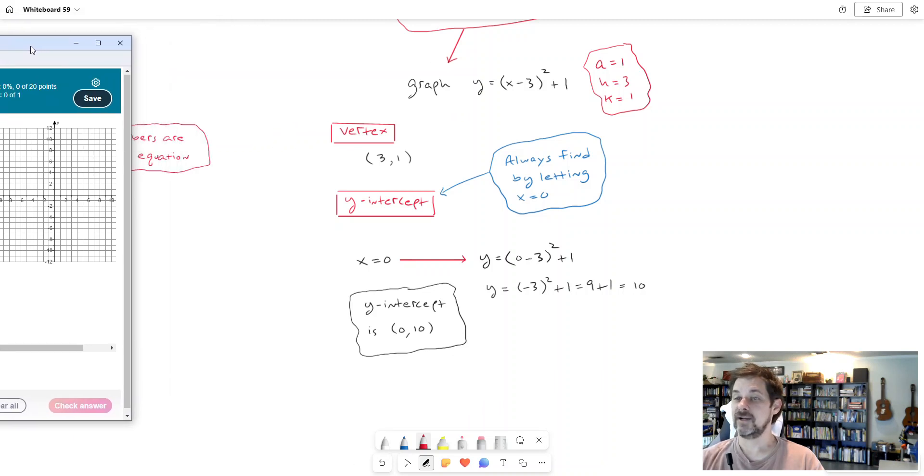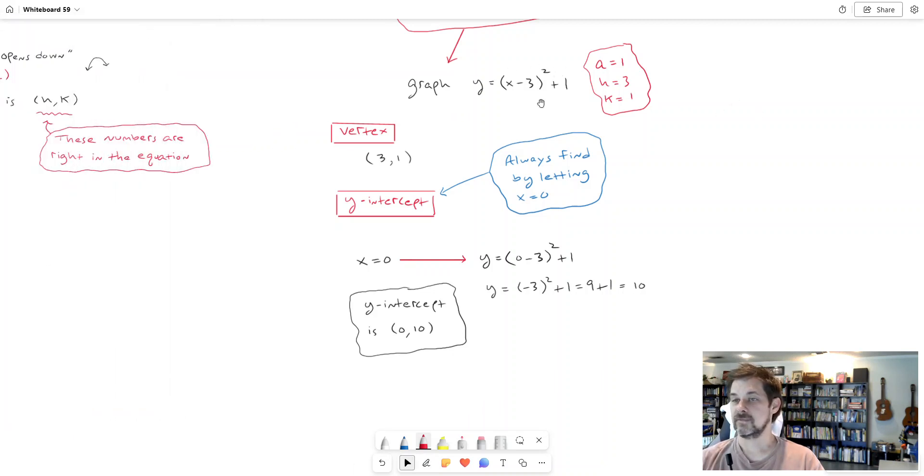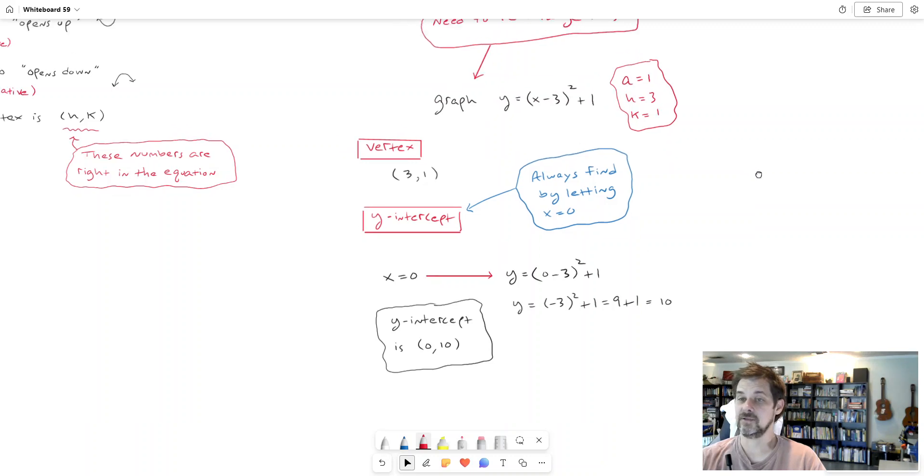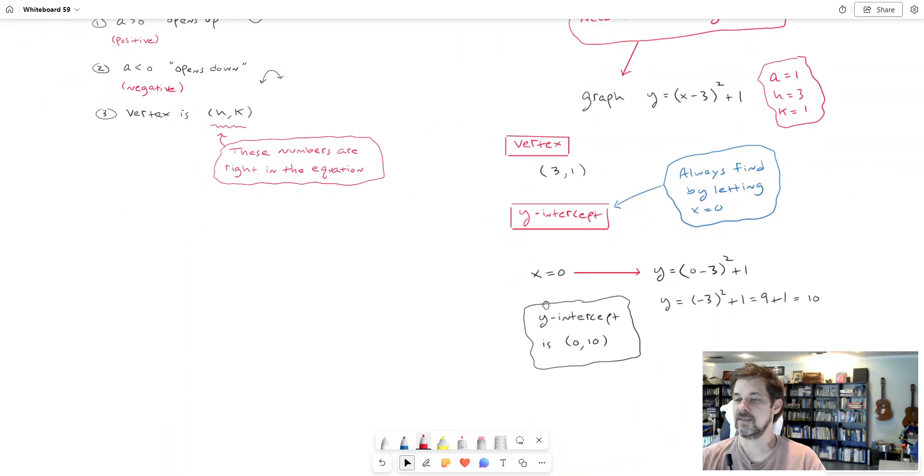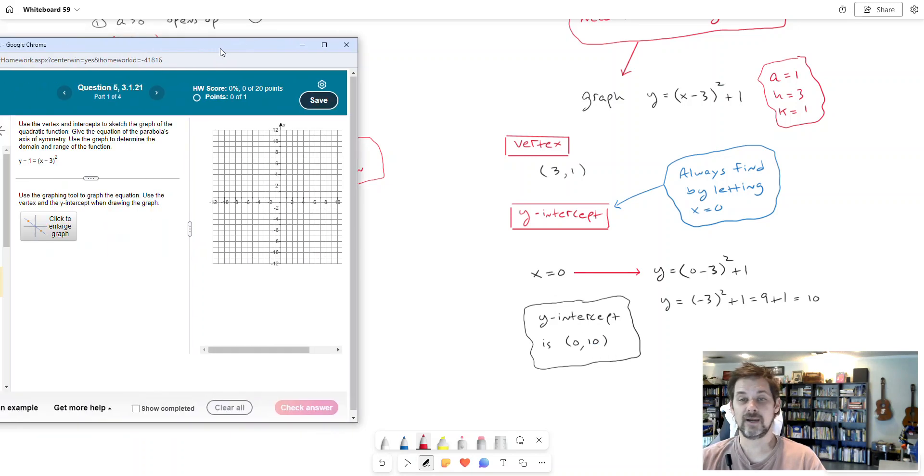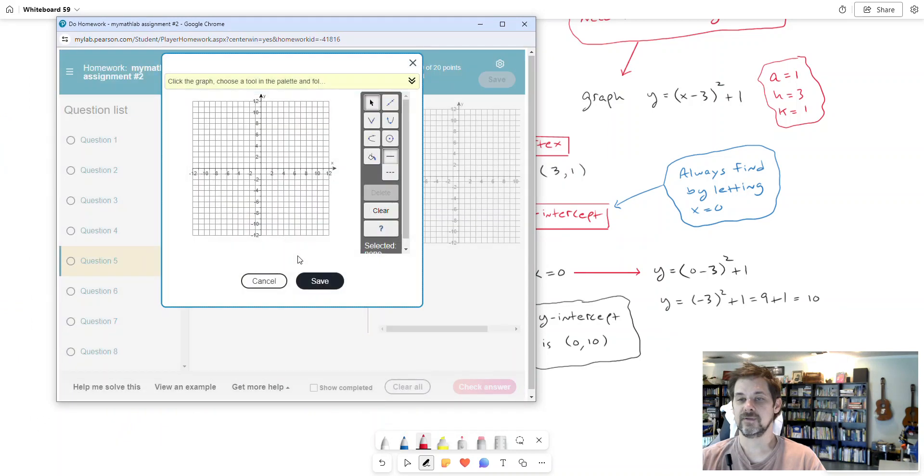So that's why always everywhere, every type of equation, no matter what it is, not just parabolas, we will find the y intercept by letting x be zero. So if I take this function, this equation that I'm working with, and I let x be zero, I just have to do a little math from there. I get zero minus three squared. Zero minus three is negative three. Negative three squared is positive nine. Nine plus one is ten. So that should do it. Between this vertex and that y intercept, the y intercept being zero for x, ten for y, the graph will take shape.